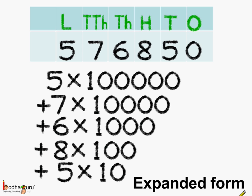So this was the expanded form of 5 lakh 76,850. See, it is so easy: 5 is under lakhs, so 5 multiplied by 1 lakh. 7 is under 10,000, so 7 multiplied by 10,000. 6 is under 1,000, so 6 multiplied by 1,000. 8 is under 100, so 8 multiplied by 100. And lastly, 5 is under 10's place, so 5 multiplied by 10. And we get the expanded form. Understood?